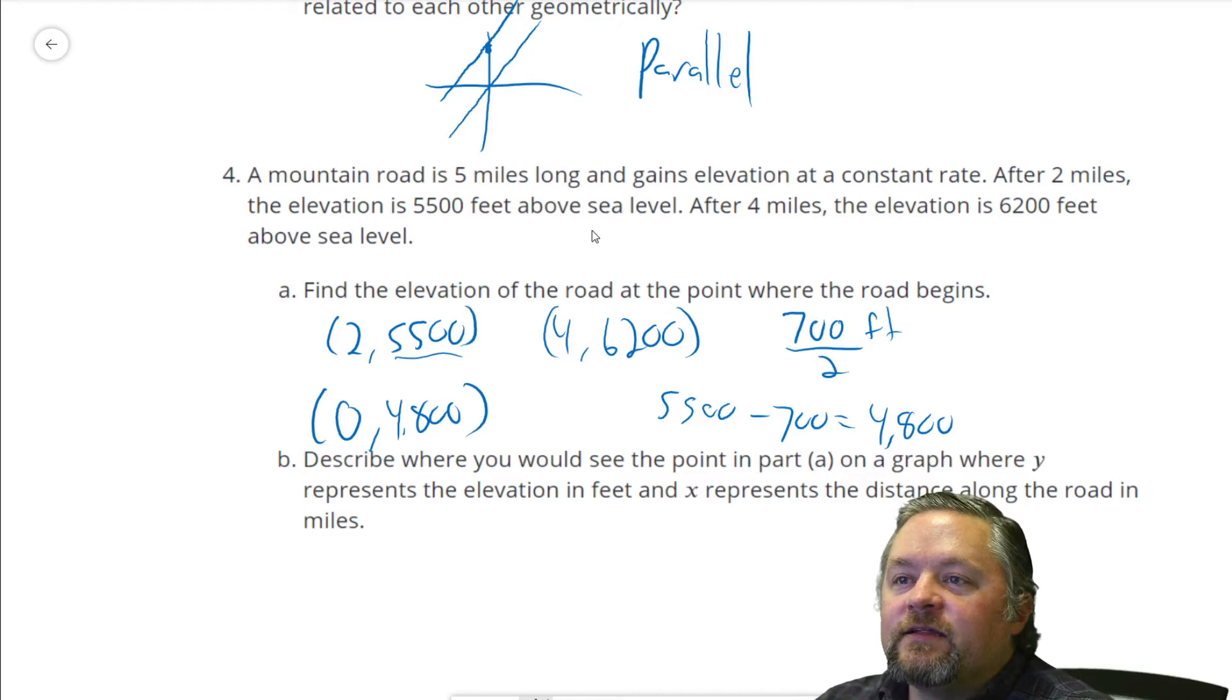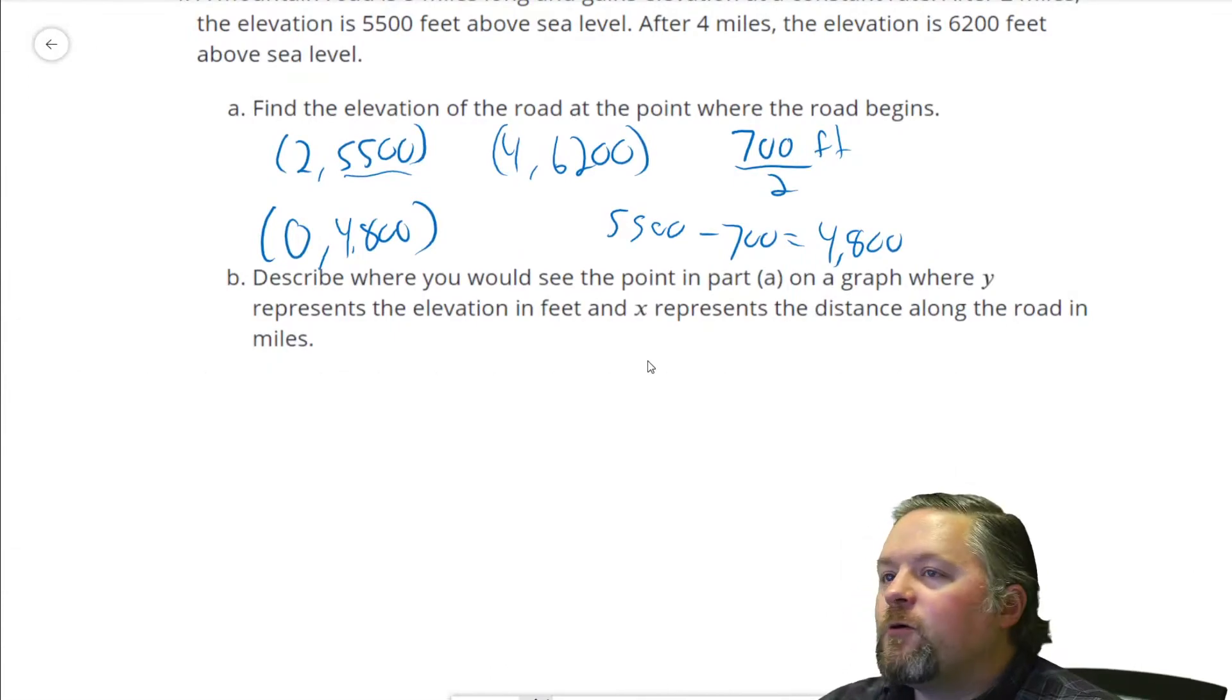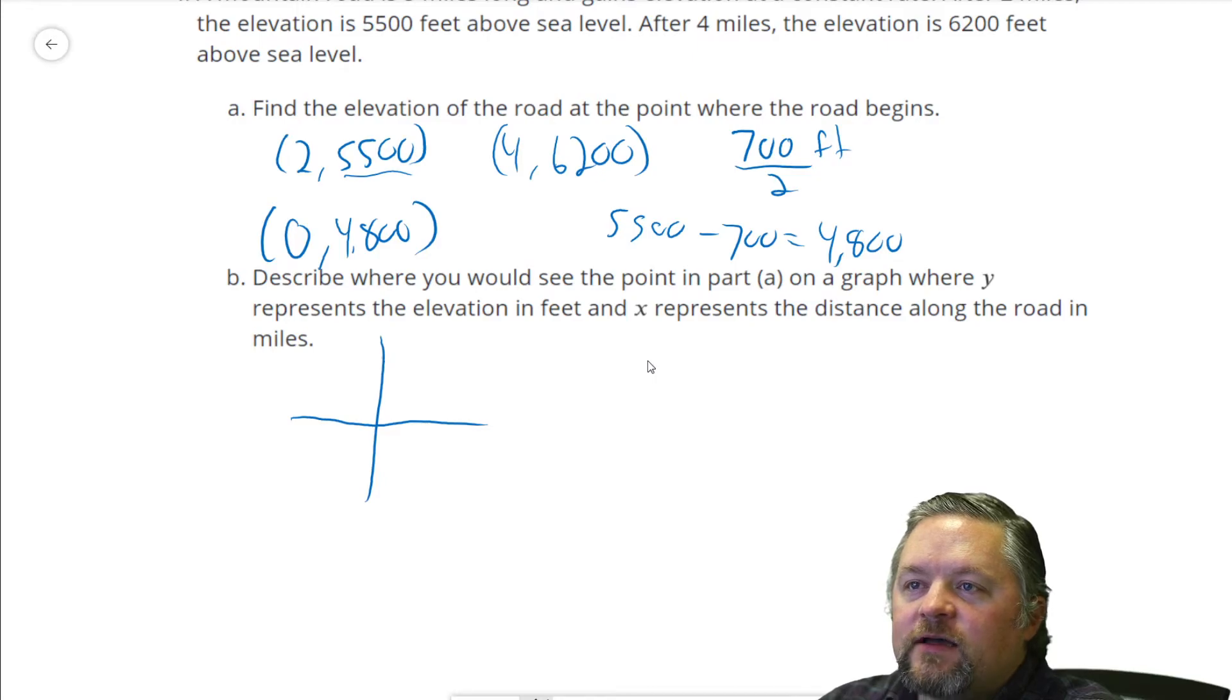5,500 subtract 700 is 4,800. So, the road begins at 4,800 feet above sea level. Describe where you would see the point in part A on a graph where Y represents elevation in feet, X represents the distance along the road in miles. If we think about a graph, that's going to be the starting value, 0 miles in or 4,800 feet, and we go up from there. That's a graph of our road. So, that point right here is the Y-intercept.